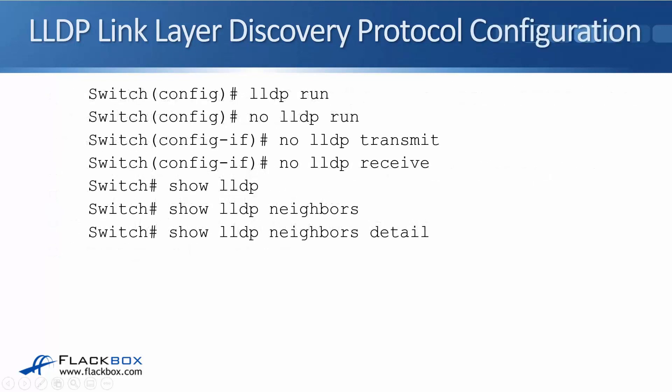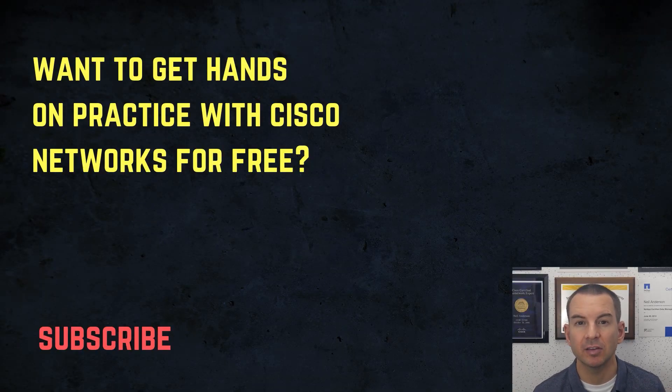To configure LLDP on a Cisco router or switch at global configuration, use 'LLDP run' to enable and 'no LLDP run' to disable — similar to CDP. To disable at the interface level, it's done separately for transmit and receive: 'no LLDP transmit' to disable sending information, and 'no LLDP receive' to disable receiving. Verification commands are similar to CDP: 'show LLDP' shows if it's enabled, 'show LLDP neighbors' shows a summary, and 'show LLDP neighbors detail' shows verbose output including IP addresses configured on those devices.